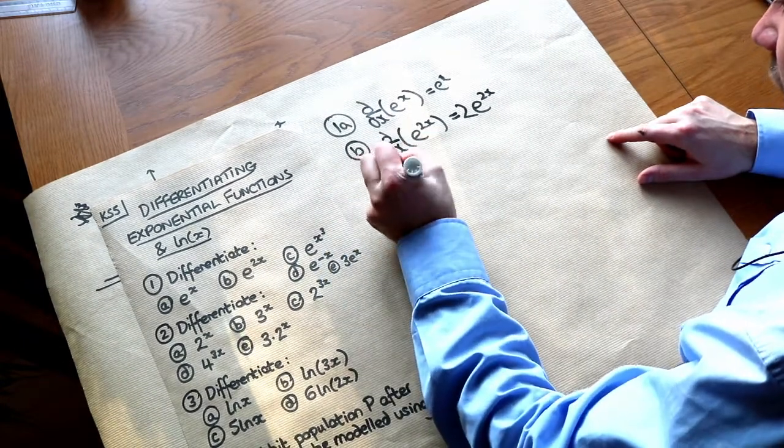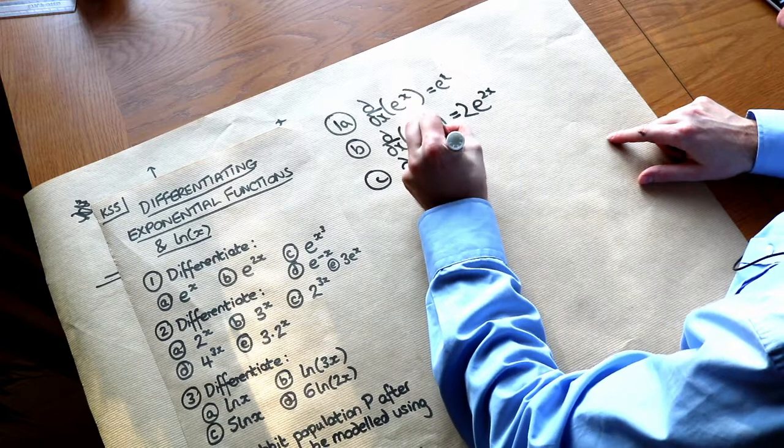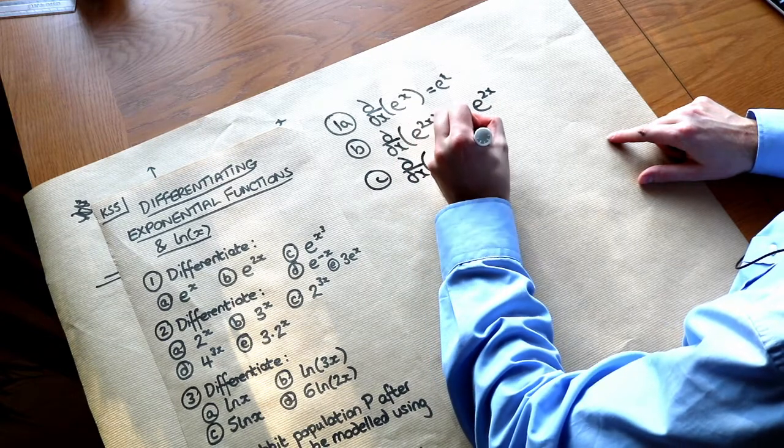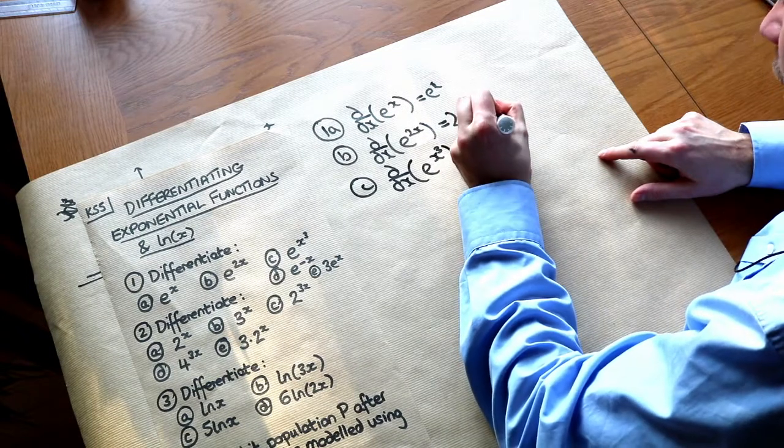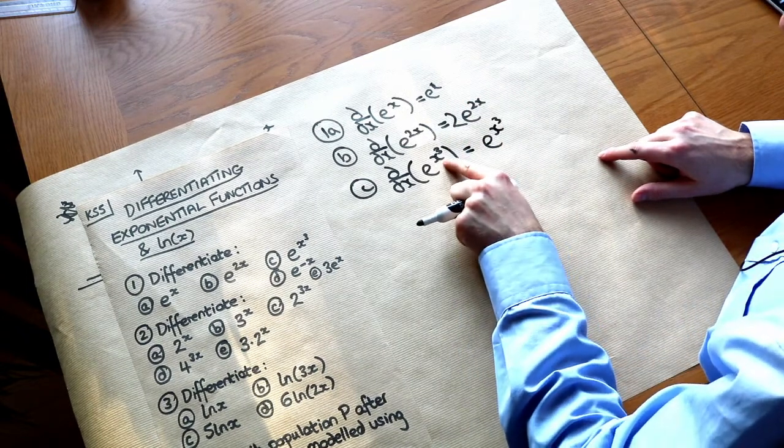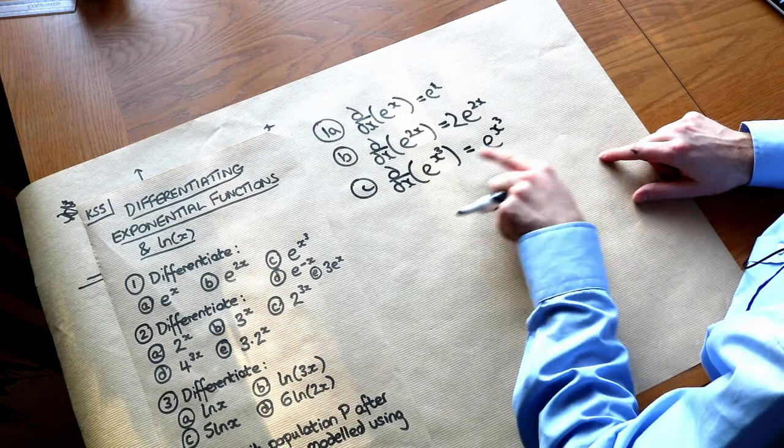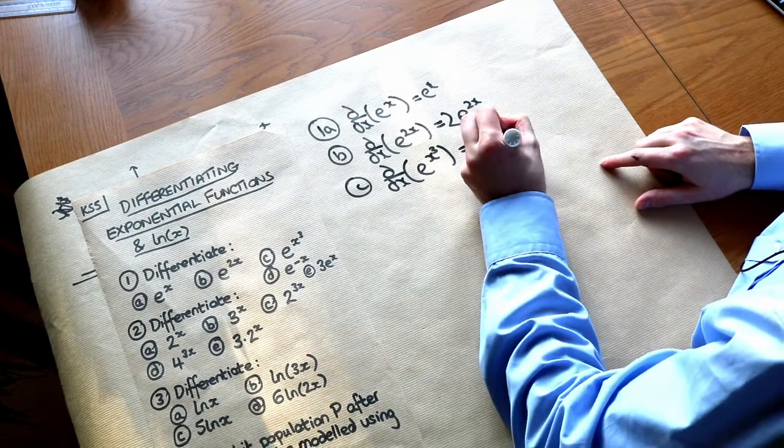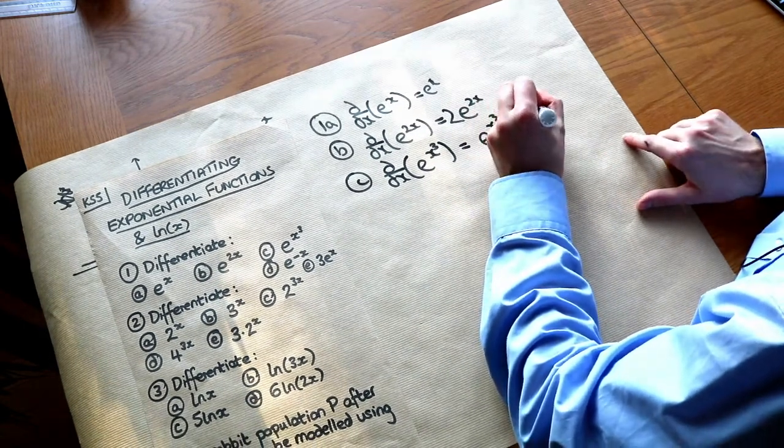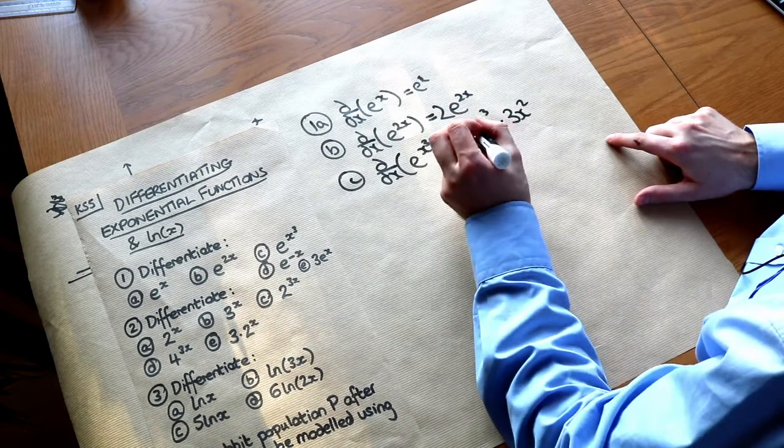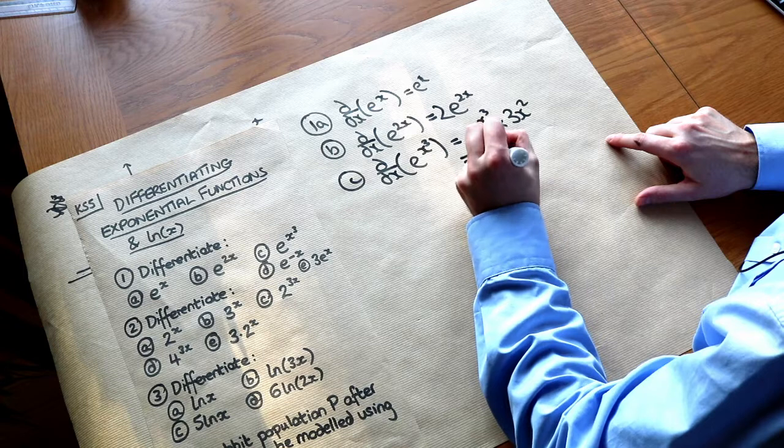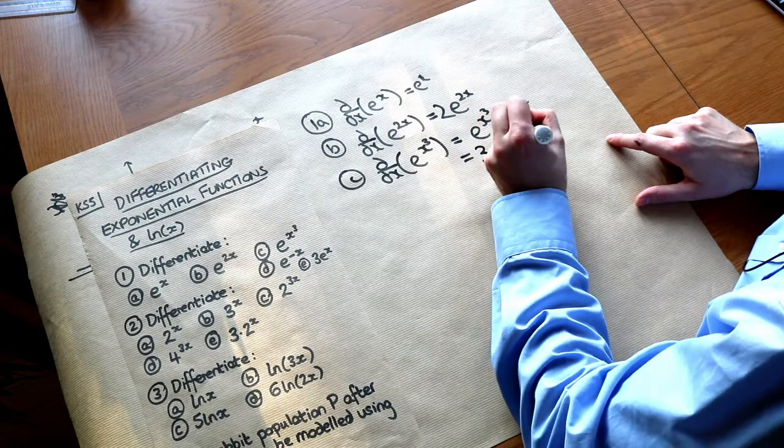And let's apply that principle for C. If I had e to the x cubed, we use something known as a chain rule again. But you just need to remember that you basically just have the same thing but you multiply by the power differentiated. So that differentiated is 3x squared and we tend to write it with this on front of the e to the x cubed. So we get 3x squared e to the x cubed to tidy it up.